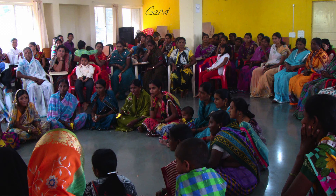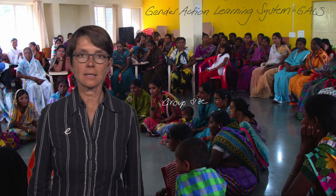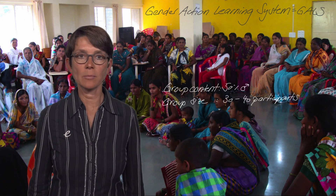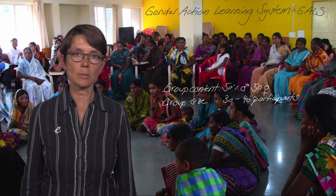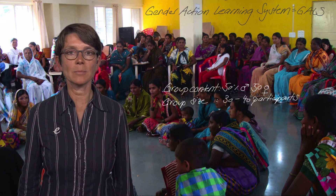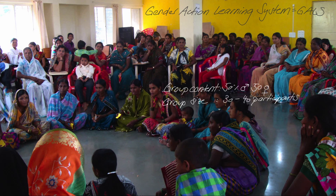The Gender Action Learning System, GALS, is a technique from the participatory rural appraisal repertoire. GALS is basically a focus group discussion tool and has been adapted and tested to the context of gender and sanitation. The ideal group size of a GALS is around 30 to 40 participants, with 50% males and 50% females. Reality sometimes shows a different picture, like experienced in India: instead of planned 20 women and 20 men from different villages, 80 women appeared and only 15 men. This means facilitators need to be very flexible and adapt to the existing situation.